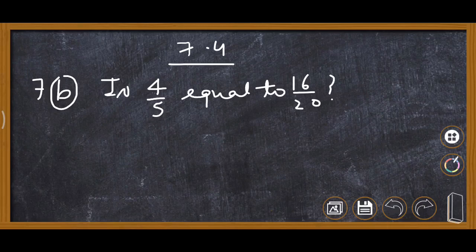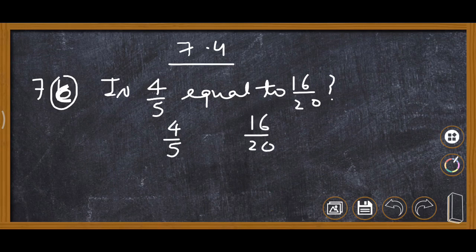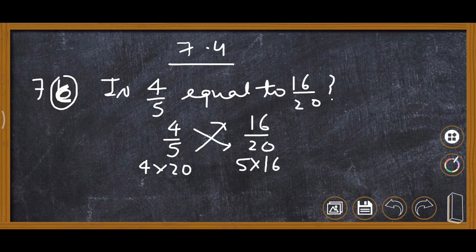Now Question 7c: is 4 upon 5 equal to 16 upon 20 or not? We write 4 upon 5 and 16 upon 20, then cross multiply. 4 multiplied by 20 is 80, and 5 multiplied by 16 is 80. Both sides are equal, so the answer is yes — 4 upon 5 is equal to 16 upon 20.